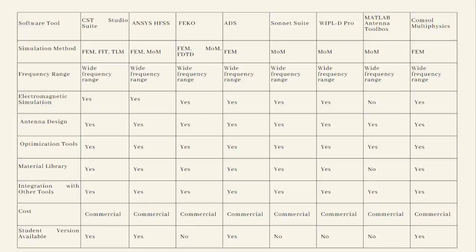The first software is CST Microwave Studio Suite. It uses finite element methods, finite integration techniques, and transmission line matrix solver. It supports a wide range of frequencies. It has all the tools — electromagnetic simulation, antenna design, optimization tool, and material library. It is capable of integrating with other software tools like HFSS or MATLAB. It is a commercial software and they have made a student version available.